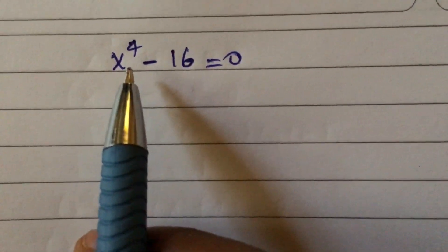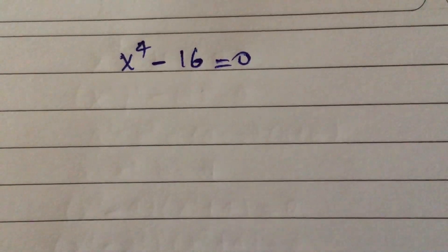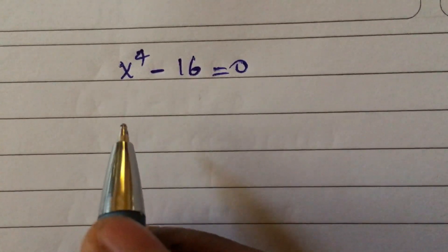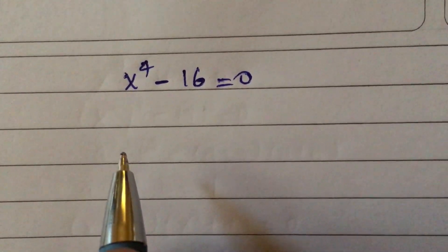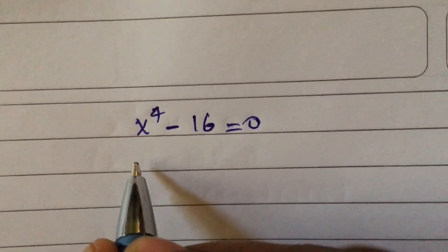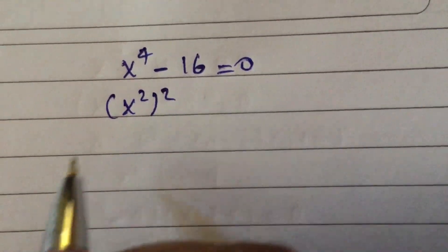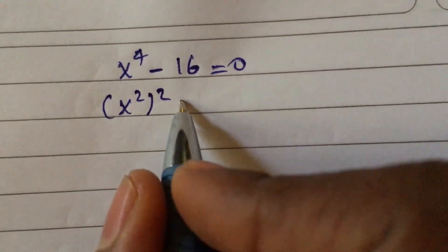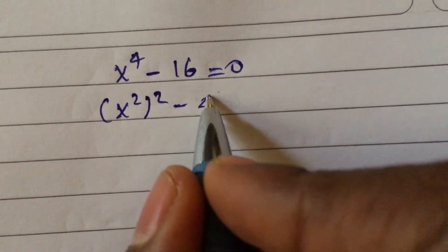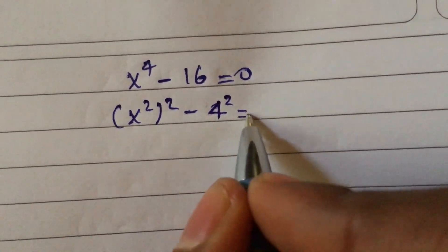How to solve the equation x to the power of 4 minus 16 equal to 0? We rewrite this as x squared, the whole square, minus 4 squared, the whole square, equal to 0.